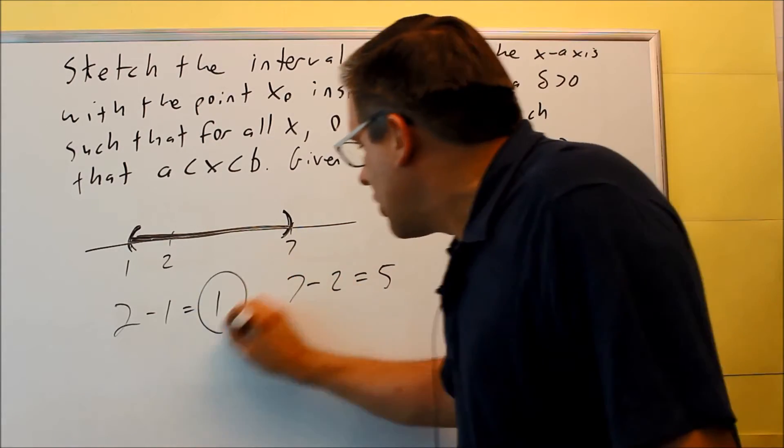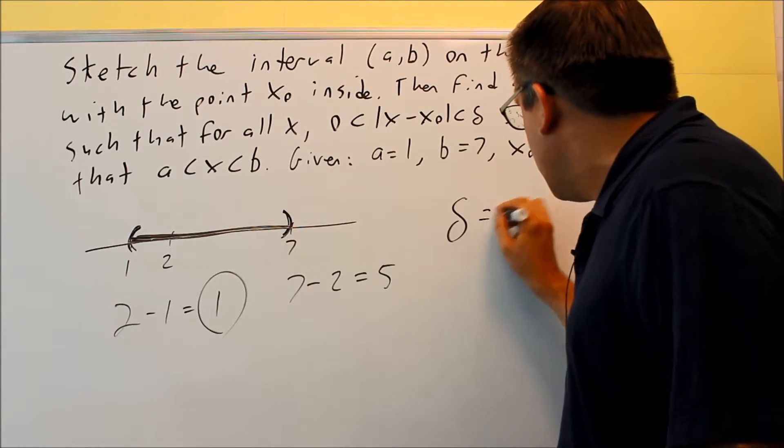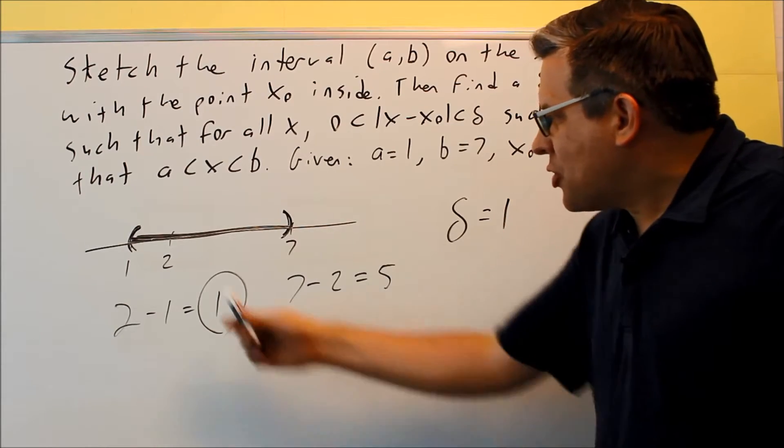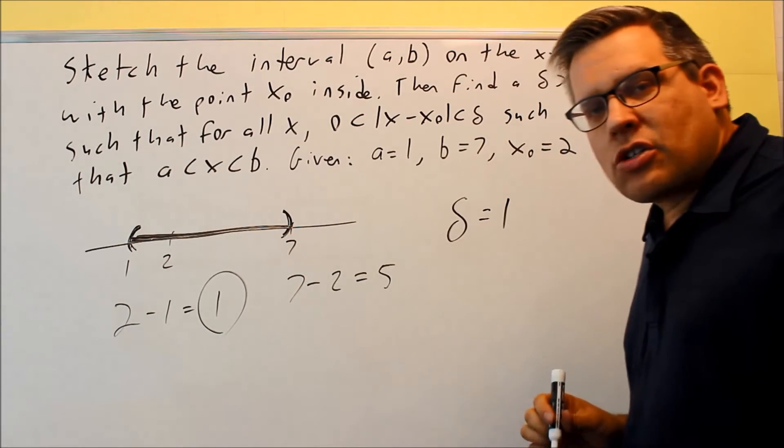The minimum distance is going to be 1. So in this case, your delta is going to be equal to 1 because that was the smallest distance between x₀ and each of the endpoints.